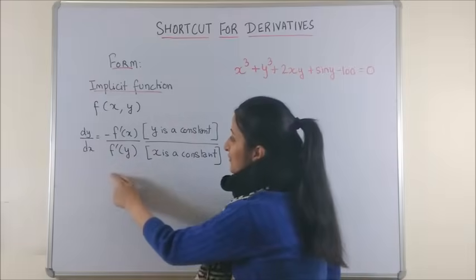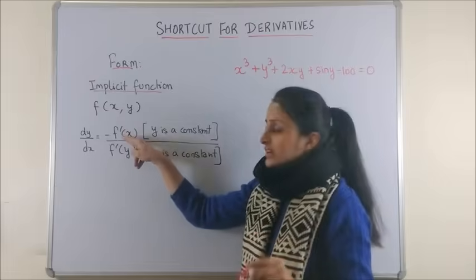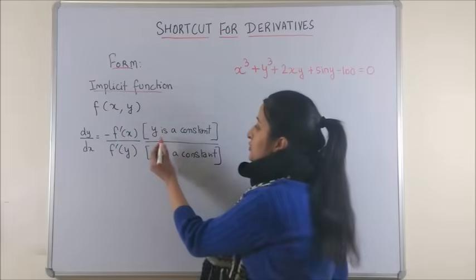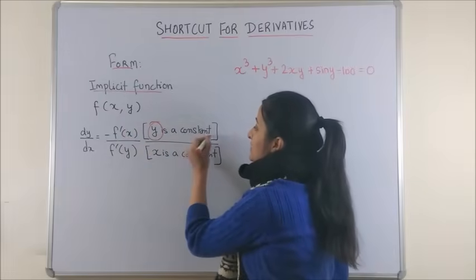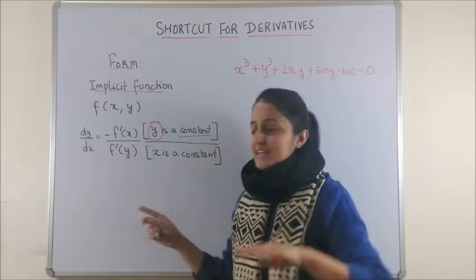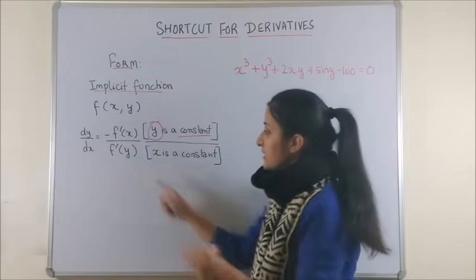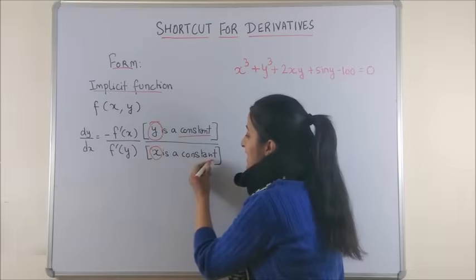Second thing, this is the formula. Your numerator will have the derivative of x where you will treat y as a constant and similarly in the denominator, you would differentiate with respect to y treating x as a constant.